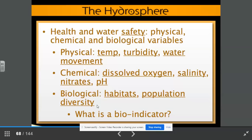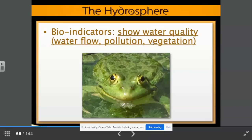What is a bioindicator? It's a living organism that indicates the health of the water system. Bioindicators show water quality, including water flow, pollution, and vegetation. Some bioindicators are very sensitive and will not be present if pollution is present.